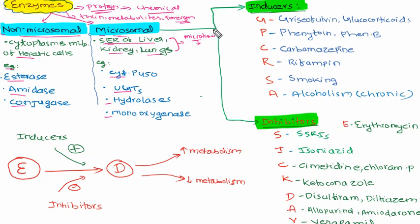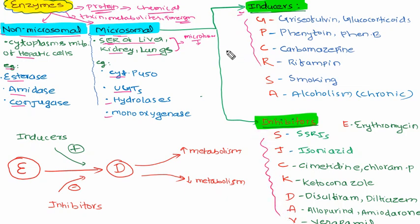These microsomal enzymes are further classified based on their regulation into inducers and inhibitors. Either the enzyme activity is enhanced by certain drugs — these are inducers — or the activity is reduced by other drugs — these are inhibitors. Let us explore how these groups of drugs affect the microsomal enzymes.